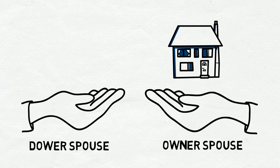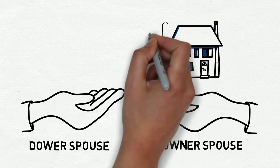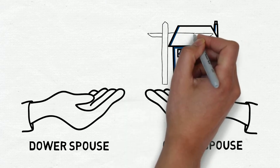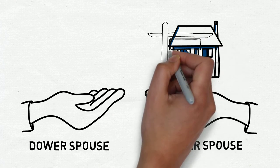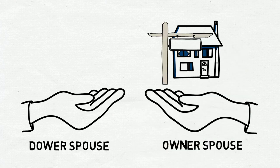The Dower Act protects the dower spouse in two main ways. The first is requiring consent from the dower spouse before selling, mortgaging, or otherwise disposing of the home in any way.